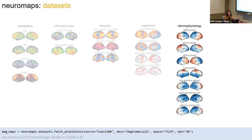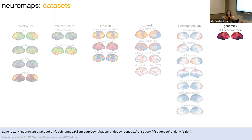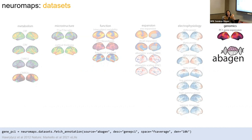These electrophysiological maps are coming from HCP's MEG datasets — six different canonical power distributions for different frequency bands, and also an intrinsic timescale map. And we have a genetic map — this one stands out because it's the only map where we upsample data. It's coming from the Allen Human Brain Atlas and the coverage isn't complete, so it's upsampled to 10,000 vertices per hemisphere. It's the first principal component of gene expression. I'll shout out Abagen, the software toolbox Ross developed before Neuromaps — super handy for fetching genetic data.